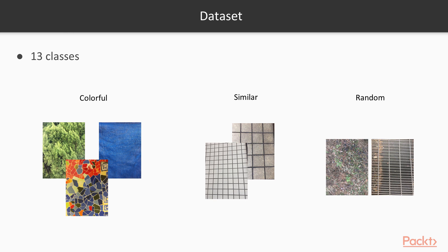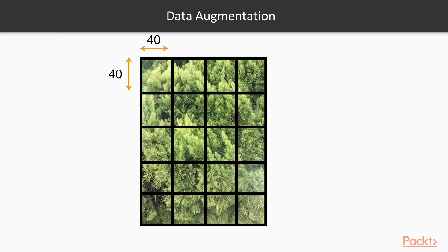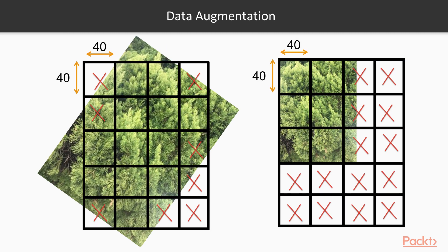The answer is data augmentation. Data augmentation is a very common technique in machine learning when there is not enough data. We will use a simple technique to increase the size of the dataset. For every picture, I will take portions corresponding to the size of the network — 40x40. Then I will modify the picture by rotating it between 0 and 360 degrees by steps of 10 degrees, and I will rescale it and do the same operations, collecting only the portions that are not empty. This way, from 13 images, we will generate a dataset of several thousand samples, and from these we will randomly divide them into training and testing datasets.